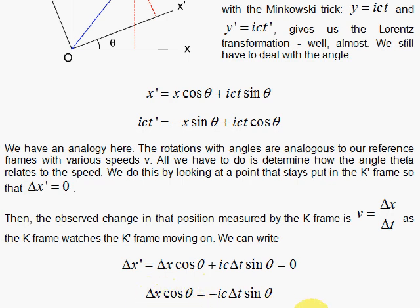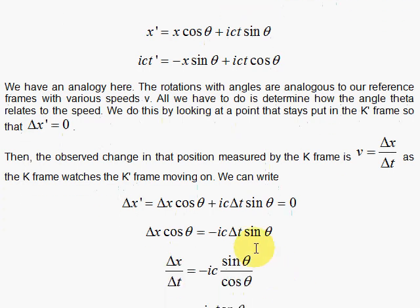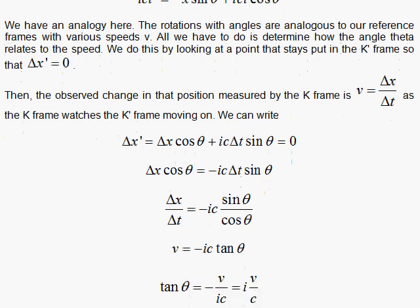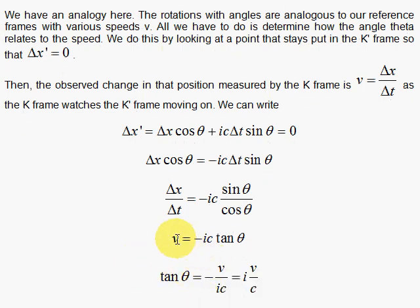To get delta x over delta t so I subtract the ic delta t sine theta and then I divide to get my delta t on the left side in the denominator. I divide to get my cosine theta over here and then I have v is minus ic tangent theta. I want to solve for my angle so tangent of theta is negative v over ic. I want to get rid of the i in the denominator, multiply top and bottom by i and then i squared frees up this, makes it positive and I get iv over c. Now I want you to think about this because the imaginary